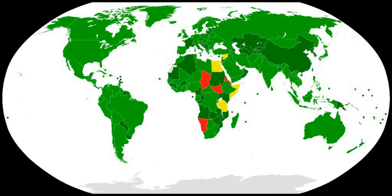The topics agreed upon were: I. Ways and means to enhance national implementation, including enforcement of national legislation, strengthening of national institutions and coordination among national law enforcement institutions. II. Regional and sub-regional cooperation on BWC implementation. III. National, regional and international measures to improve biosafety and biosecurity, including laboratory safety and security of pathogens and toxins. IV. Oversight, education, awareness raising, and adoption and/or development of codes of conduct with the aim to prevent misuse in the context of advances in bio-science and biotechnology research with the potential of use for purposes prohibited by the convention.